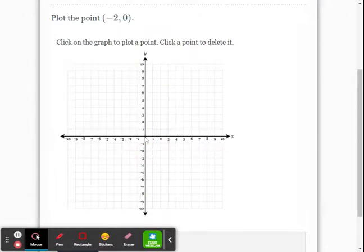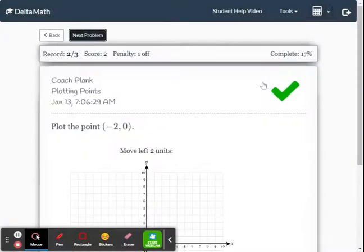I go back here and okay, I needed to go left two first and then I don't go up. That's my point. So then you submit it and you get the check mark. No penalty.